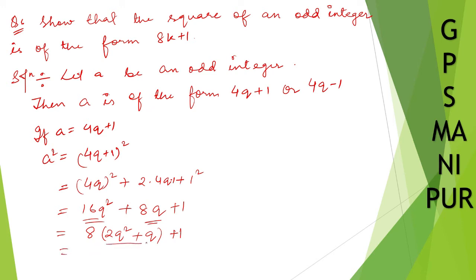Taking 8 common from the first two terms: 8 times (2q squared plus q) plus 1. We write 2q squared plus q as k, so a squared equals 8k plus 1, where k equals 2q squared plus q.